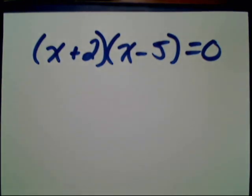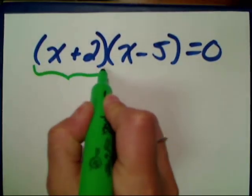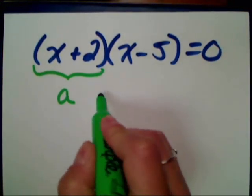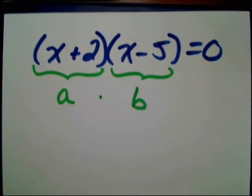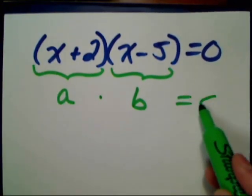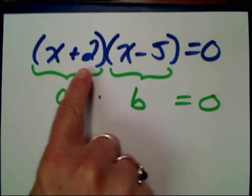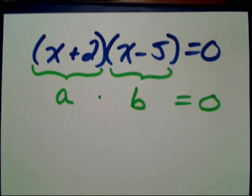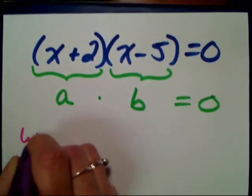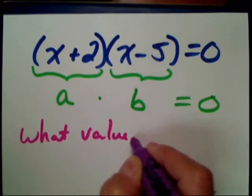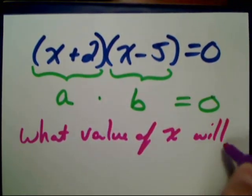I have two numbers that are factors, meaning they're being multiplied together — this is a product. This right here is that A, and it's being multiplied by this value, which is B. So I have A times B equal to zero. I have the exact setup of the zero product property: two numbers being multiplied together equal to zero. Then according to the property, either A is zero, B is zero, or both.